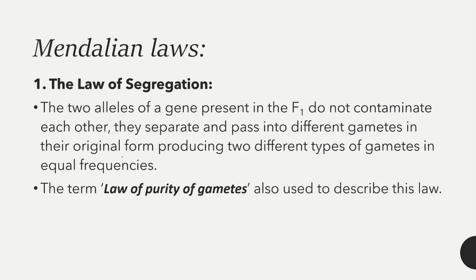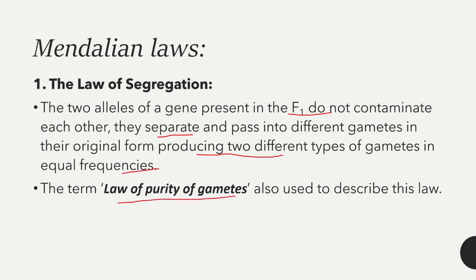The next topic is Mendelian laws. The first is the law of segregation: the two alleles of a gene present in F1 do not contaminate each other; they separate and pass into different gametes in their original form, producing two different types of gametes in equal frequency. This law is also known as the law of purity of gametes.